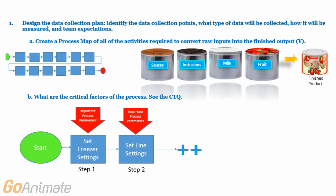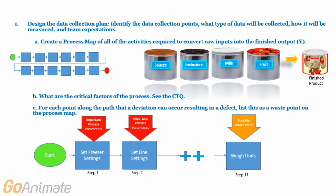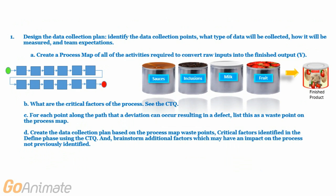Sub-step B: What are the critical factors of the process? See the critical to quality diagram created in the Define phase. Sub-step C: For each point along the path that a deviation can occur resulting in a defect, list this as a waste point on the process map. Sub-step D: Create the data collection plan based on the process map waste points and critical factors identified in the Define phase using the CTQ, and brainstorm additional factors.